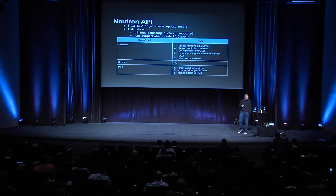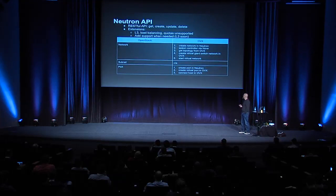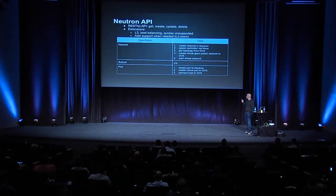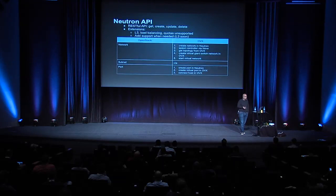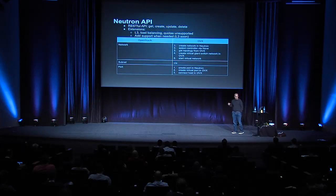As far as the API, we've mapped a create network call to five calls within OVX. First, it creates a network in Neutron; we spawn a controller via Nova; we get the topology from OVX; we create a giant virtual switch network in OVX; and we start that virtual network. For subnet, we don't really map to anything because subnets don't have a strong meaning in OpenFlow networks. For port, we create the port in Neutron, create a virtual port in OVX, and connect the two together.